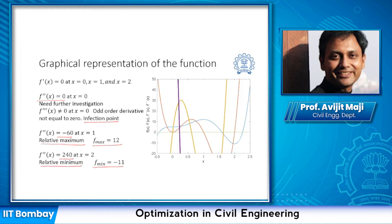Let's look into the graphical representation. The blue line indicates the function and the red line indicates the first order derivative. We need to find where the first order derivative is zero. We can clearly see that at x = 0, x = 1, and x = 2, the slopes are zero — these are the three values with potential for an optimum or inflection point.